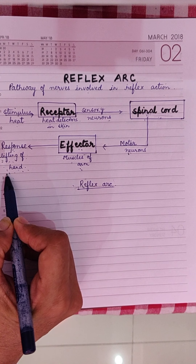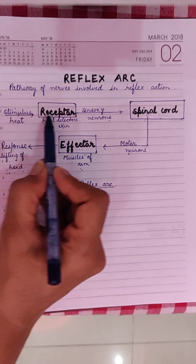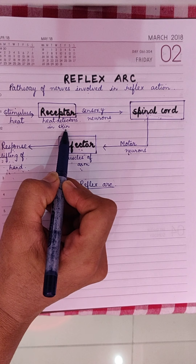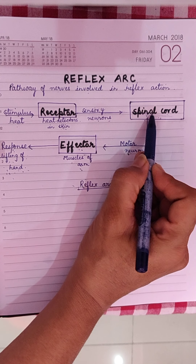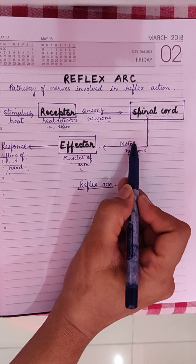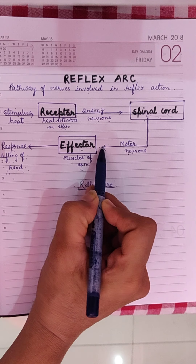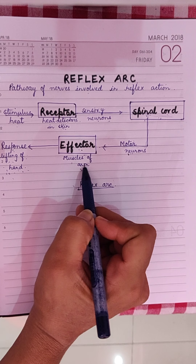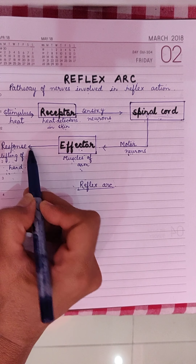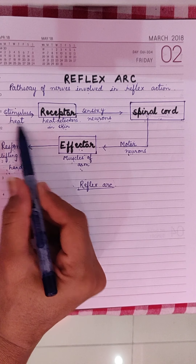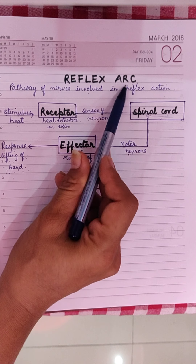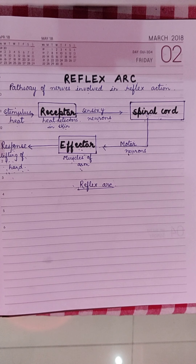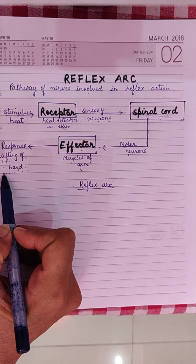This is the schematic representation of a reflex arc. The heat stimulus is received by the receptors in the skin; through the sensory neurons, the message is carried to the spinal cord; the spinal cord passes the message to the motor neurons; these bring the message to the effector muscles of the arm, which move, generating the response of lifting the hand away from the hot object. This is the flow chart depicting a reflex arc. Please practice drawing the diagram from page 117 of the NCRT book and also practice writing this flow chart for a reflex arc.